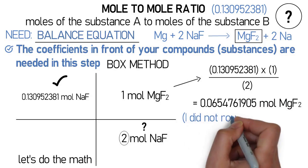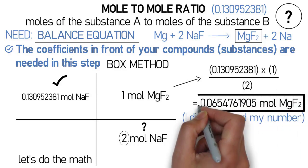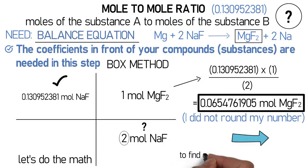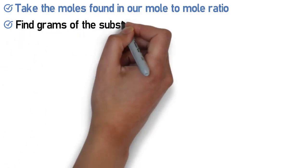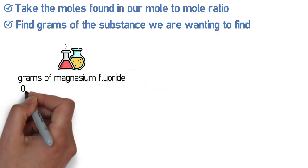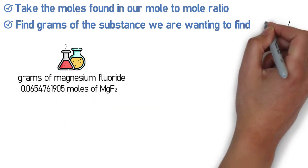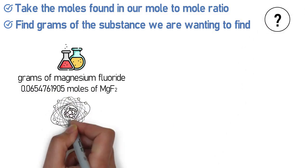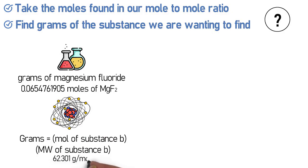Notice I did not round that number — rounding is not done until the final answer. Now that we have the moles of magnesium fluoride, we go to the last step: find the grams of magnesium fluoride. We take the moles found in the mole-to-mole ratio in step three and multiply by the molecular weight of magnesium fluoride. Our moles of magnesium fluoride are 0.0654761905, and the molecular weight of magnesium fluoride is 62.301 grams per mole.